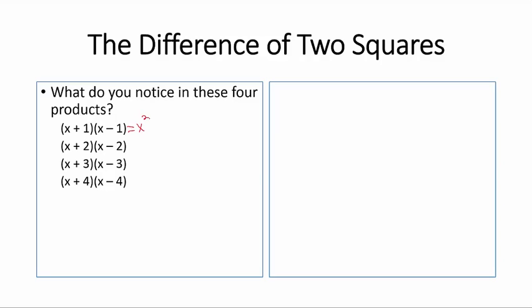The first product is x squared minus x plus x minus 1. These two terms collapse and you get x squared minus 1.